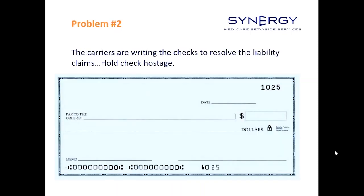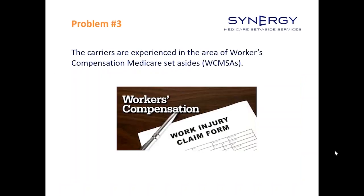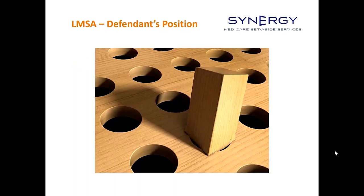Problem number two: the carriers are writing the checks to resolve liability claims, so they're holding those checks hostage. We're getting this call at least 15 times a week where the carrier is saying they're not going to cut a check until Medicare's future interests are properly addressed. On top of that, these carriers and defendants are introducing giant Medicare set-asides at the 11th hour, and introducing them improperly — trying to jam a square peg into a round hole because they're so used to workers' comp.